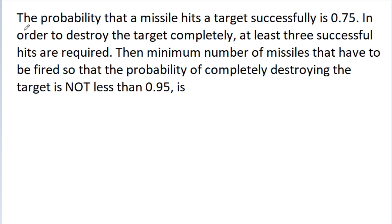In this video, we have given that the probability that a missile hits a target successfully is 0.75. In order to destroy the target completely, at least 3 successful hits are required. Then the minimum number of missiles that have to be fired so that the probability of completely destroying the target is not less than 0.95.